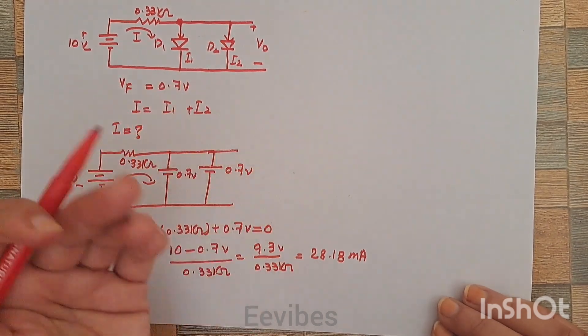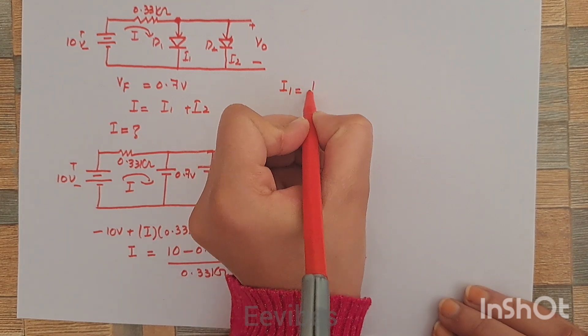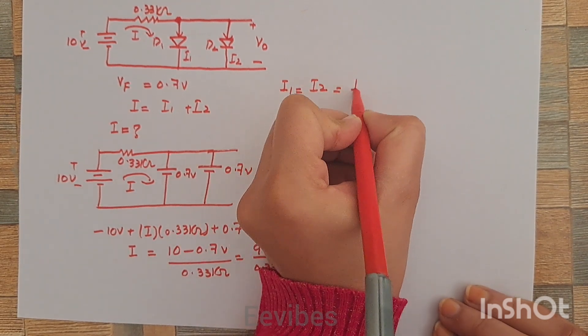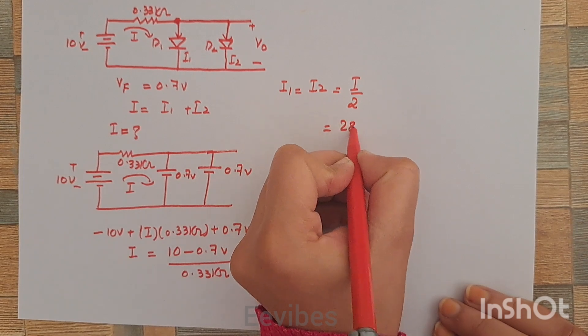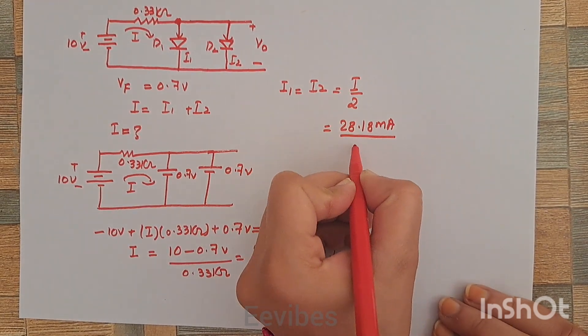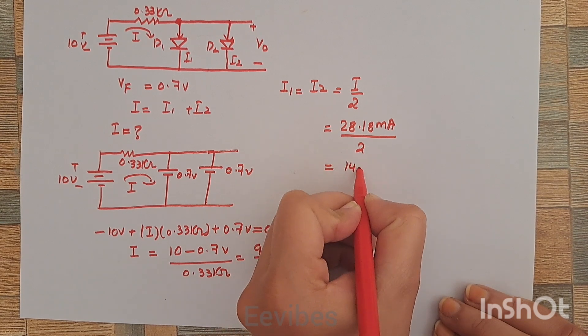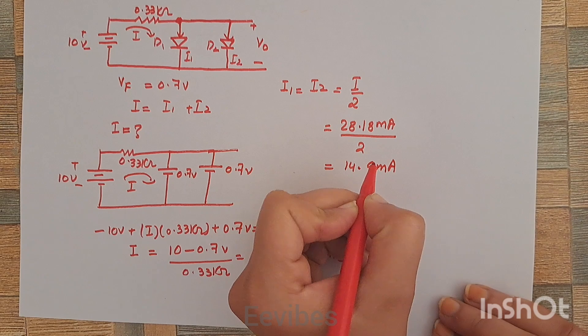Assuming that both diodes are having the same characteristics, equal current will be distributed across each diode. So I1 is equal to I2, which equals I divided by 2. We'll have 28.18 milliamperes divided by 2, which results in 14.09 milliamperes.